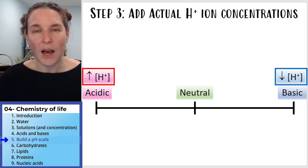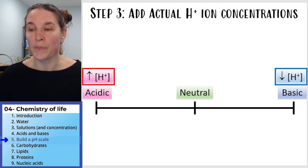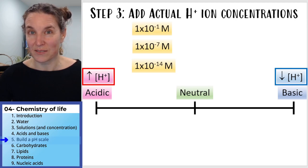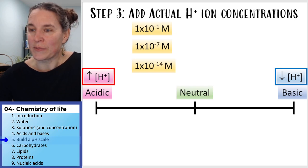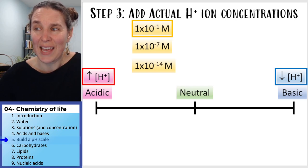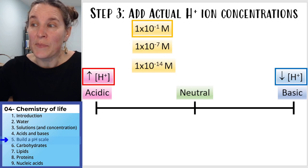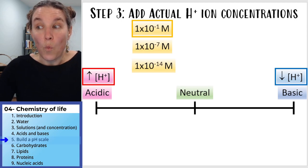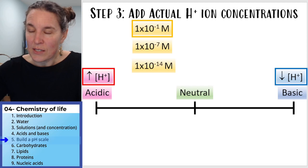Step three: I want you to add some actual hydrogen ion concentrations. I'm going to give you three actual concentrations. The first is 1×10⁻¹, which is a one-tenth molar solution. The second is 1×10⁻⁷. The third is 1×10⁻¹⁴.